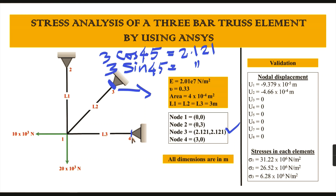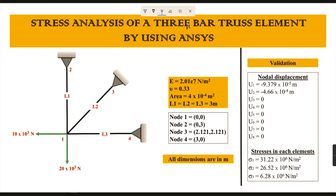Node number four is at x = 3 and y = 0. With these node coordinates we can draw the three bar truss element and validate against theoretical values. The theoretical results include nodal displacements, stresses, and reaction forces to check whether our applied loads are consistent.